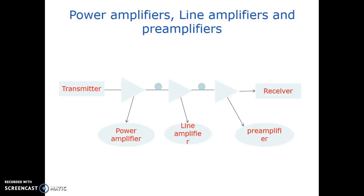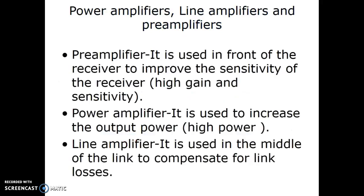The power amplifier and the line amplifier are used in the line itself for power and signal amplification. The preamplifier is used just before the receiver unit to boost up the signal before giving it to the receiver unit. Preamplifier is used in front of the receiver to improve the sensitivity of the receiver — high gain and sensitivity.